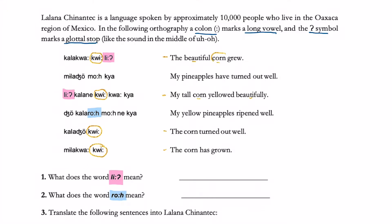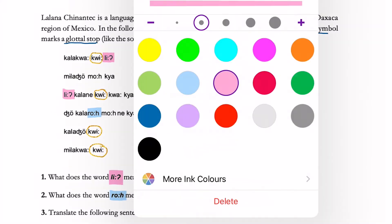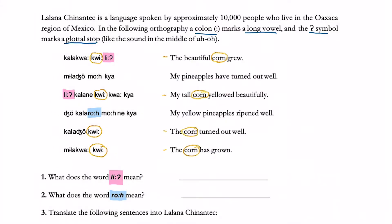Now, knowing the word order is extremely important because not every language has the word order of subject, verb, object. From simple mix and matching and logic, we can find out that this language has the general word order of verb and then subject.